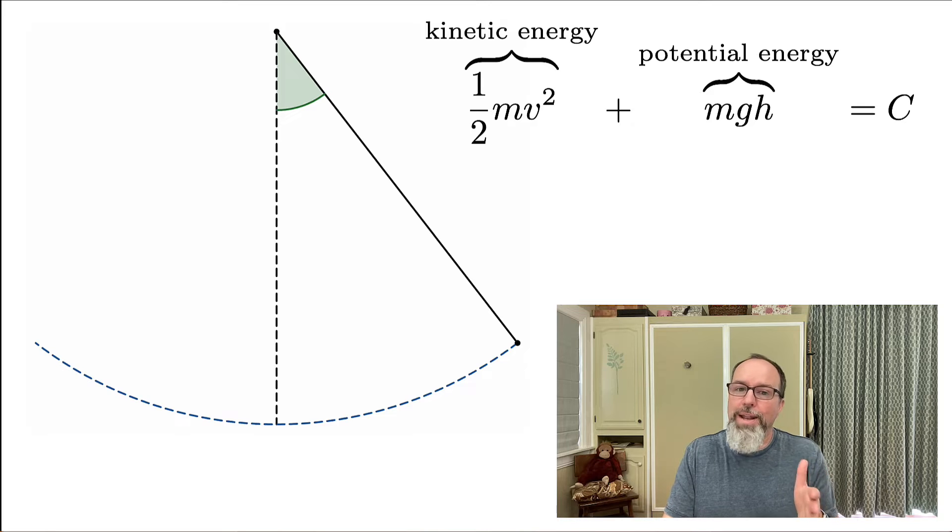Kinetic energy is one-half mass times velocity squared. Potential energy is mass times gravity times height. Okay, so let's introduce a couple of variables here.